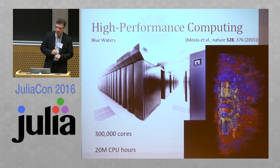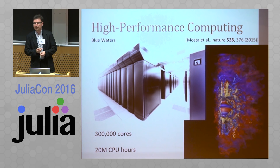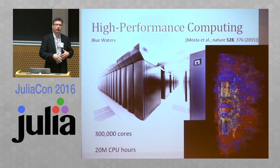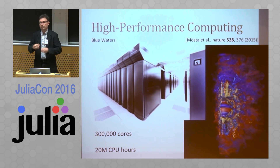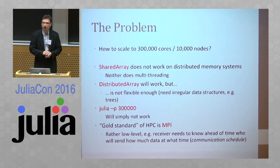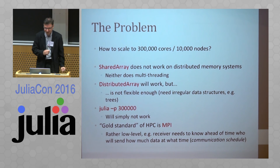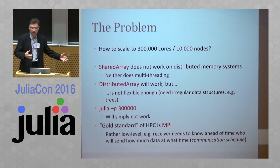Obviously these machines are difficult and complicated to use. Currently our code base uses C++, Fortran as a mathematical code to generate C++ code, and so on. My hope is that at some point Julia will be able to replace all that in a way that is much easier to use and also faster. But today I want to talk about high performance computing, and for me that is distributed memory computing. The question is: how do you scale to 300,000 cores or to 10,000 nodes?